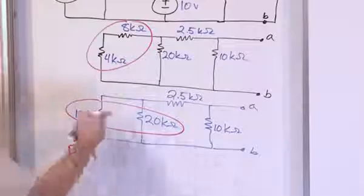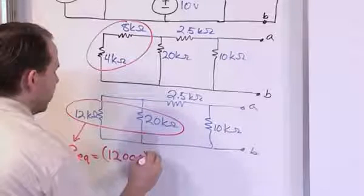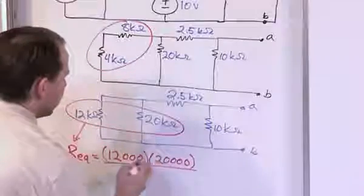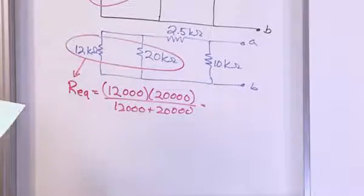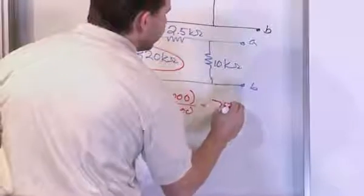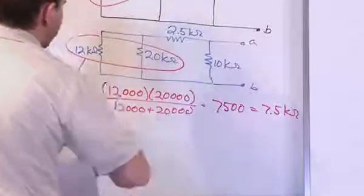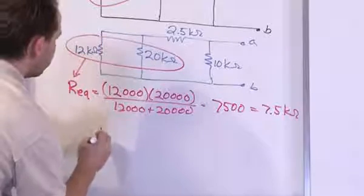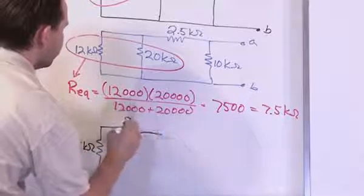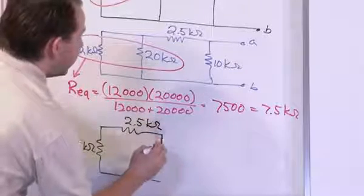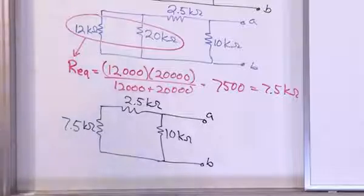For two resistors in parallel, we use product over sum. So 12,000 times 20,000, divided by 12,000 plus 20,000, gives 7,500 ohms, which is 7.5 kiloohms. We redraw: the parallel combination resolves to 7.5k, and we still have 2.5k at the top and 10k on the side between terminals A and B.